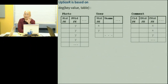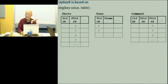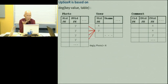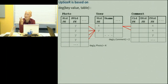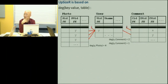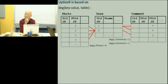Upsizer uses three ideas. The first idea is degree. Degree is a very simple idea: a user X uploads four photographs, so the degree of X to the photo table is four. User X makes two comments, so the degree of X to the comment table is two. We call it a degree because this is actually a bipartite graph, and each bipartite graph is induced by an edge in a schema graph.